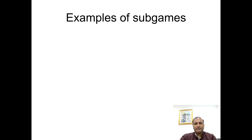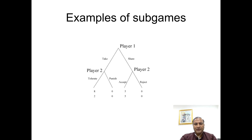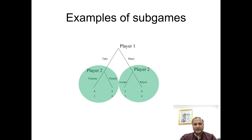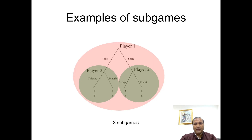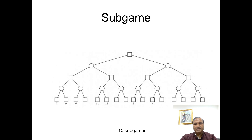Let me give you some examples to see how we find sub-games in a full game. We take a game where player one moves first, and then player two moves after player one. We want to find how many sub-games we have. There is one sub-game where player two can move, another sub-game where player two can take an action, and the whole game is also called a sub-game — so we have three sub-games in this full game.